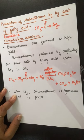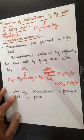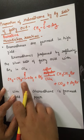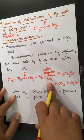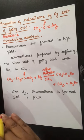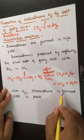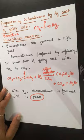In this reaction, we find out bromoalkane in good amount. Silver salt of fatty acid is refluxed with bromine in the presence of CCl₄. Chloroalkane can also be formed in the same manner, but the yield is poor.